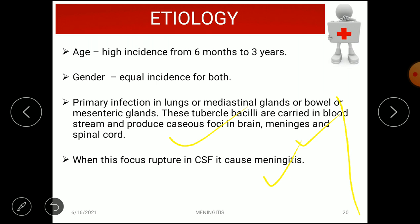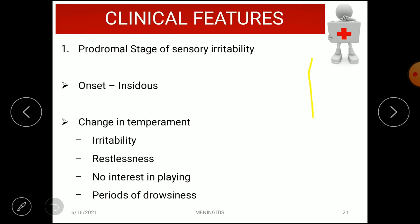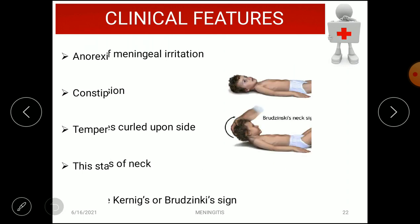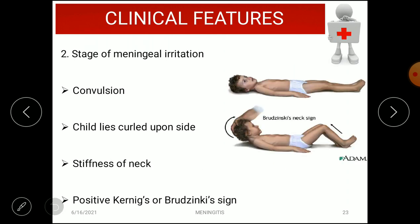The clinical features of tuberculous meningitis are categorized in three stages. The first is the prodromal stage, characterized by sensory irritability with insidious onset, change in temperament, irritability, restlessness, no interest in playing, drowsiness, anorexia, vomiting, constipation, and normal or slightly raised temperature. This stage lasts for weeks or more.